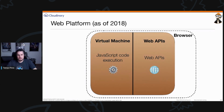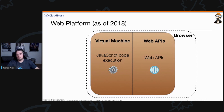Browsers also contain a virtual machine, and up until 2018, the virtual machine inside the browser was able to execute JavaScript code. That's a simple view of what the browser is doing — a virtual machine to execute JavaScript code, and you can access the web APIs.